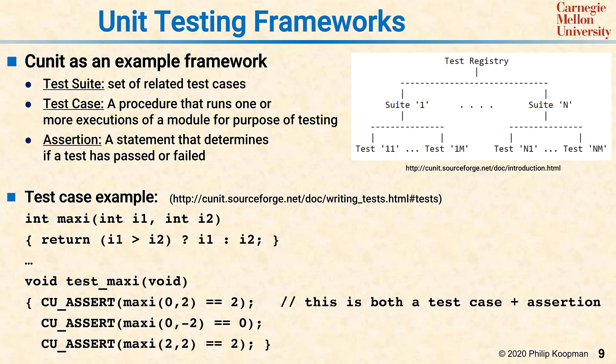In practice, a CUnit test looks like long lists of CU_ASSERT or other similar assertions, and inside each assertion is a test that sends inputs to the unit you're trying to test and then checks for the expected output.